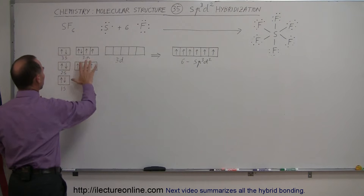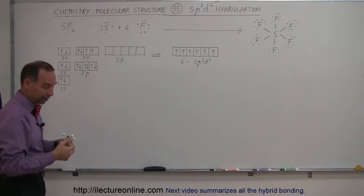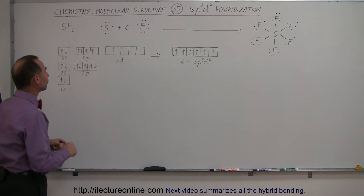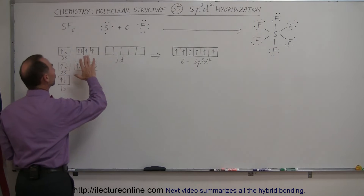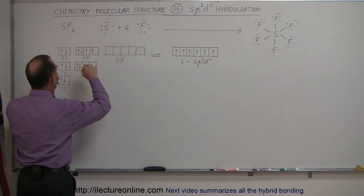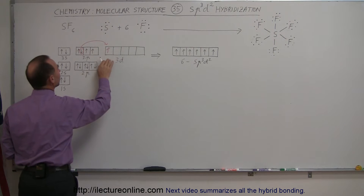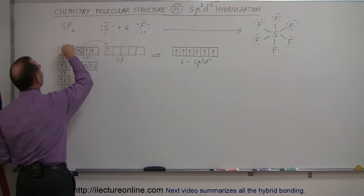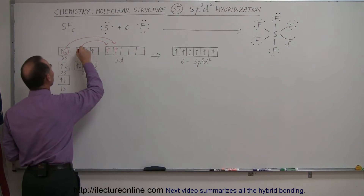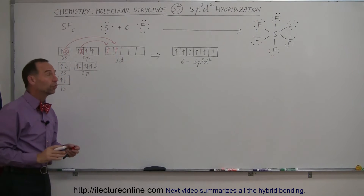There's nothing in the orbital structure that will allow that to happen unless the orbitals become hybridized — and that's exactly what happens. There's going to be a promotion of two electrons into the 3d orbitals, even though they're empty. One electron from the p orbitals and one 3s electron are promoted into 3d orbitals, giving us six electrons ready to do bonding.